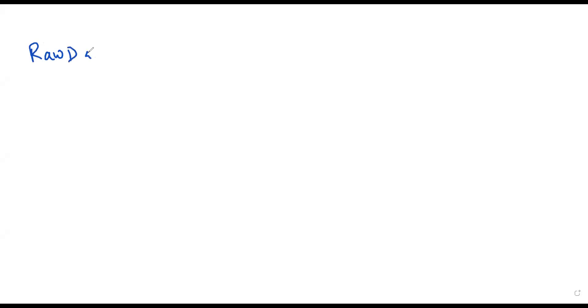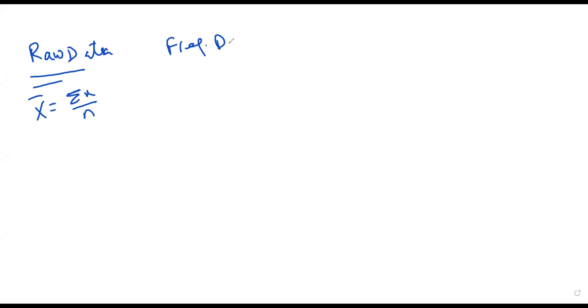Bismillahirrahmanirrahim. So you have seen that when you had raw data, the formula for the mean was sigma x over n. Then when you had the frequency distribution, this formula changed into sigma fx over sigma f. Then you had the probability distribution.